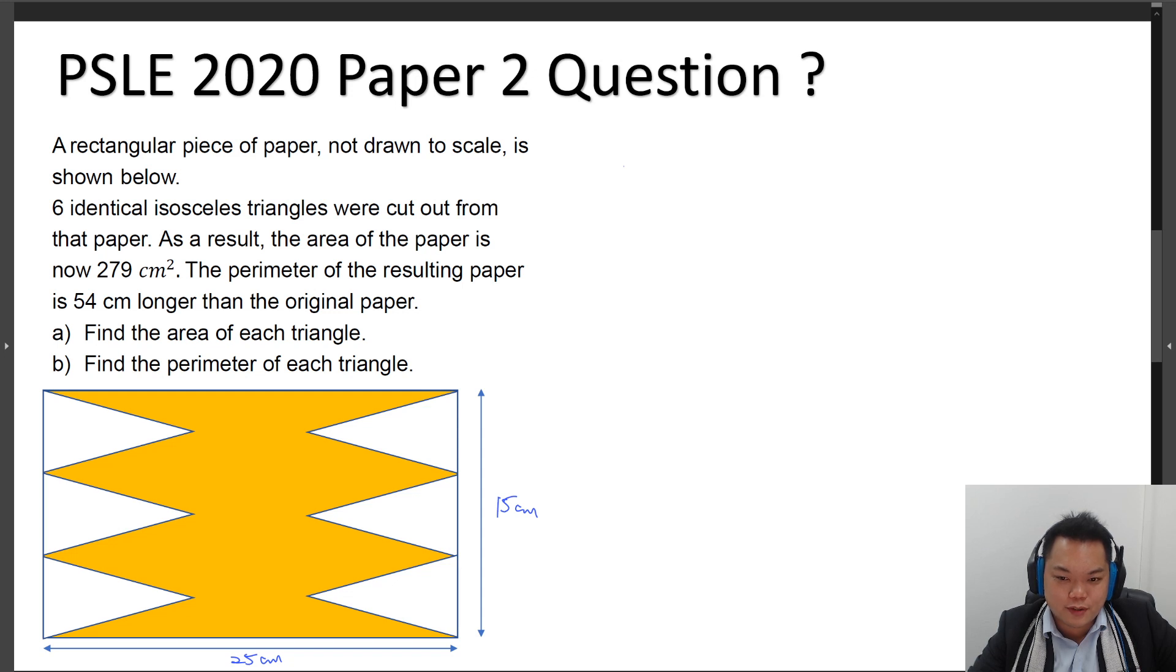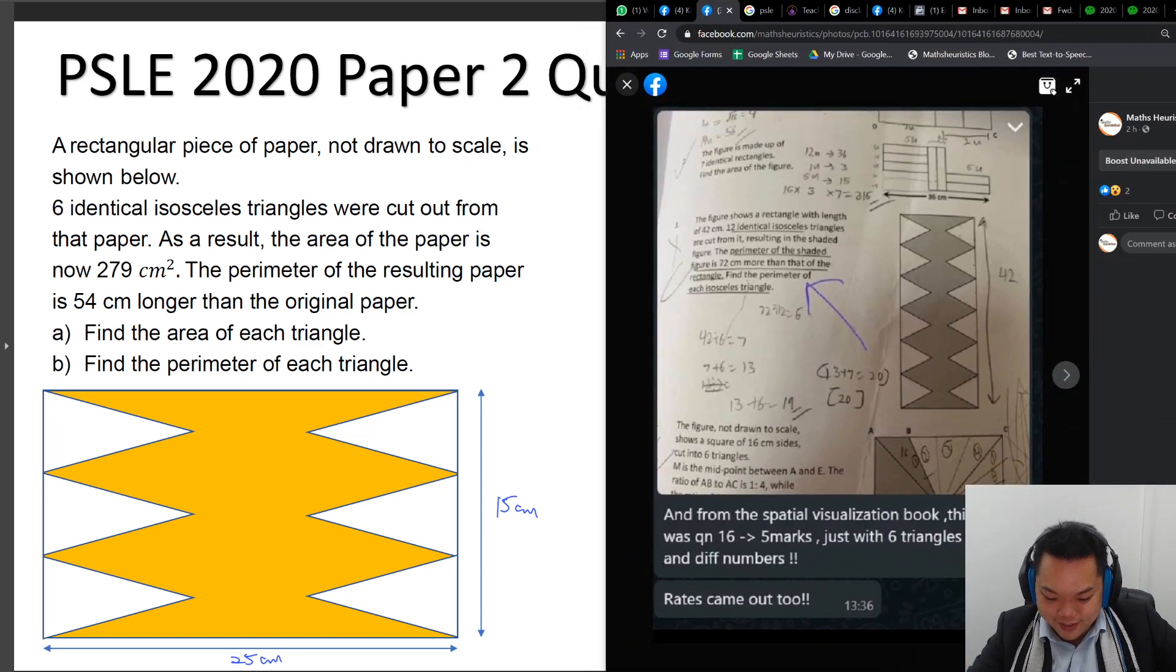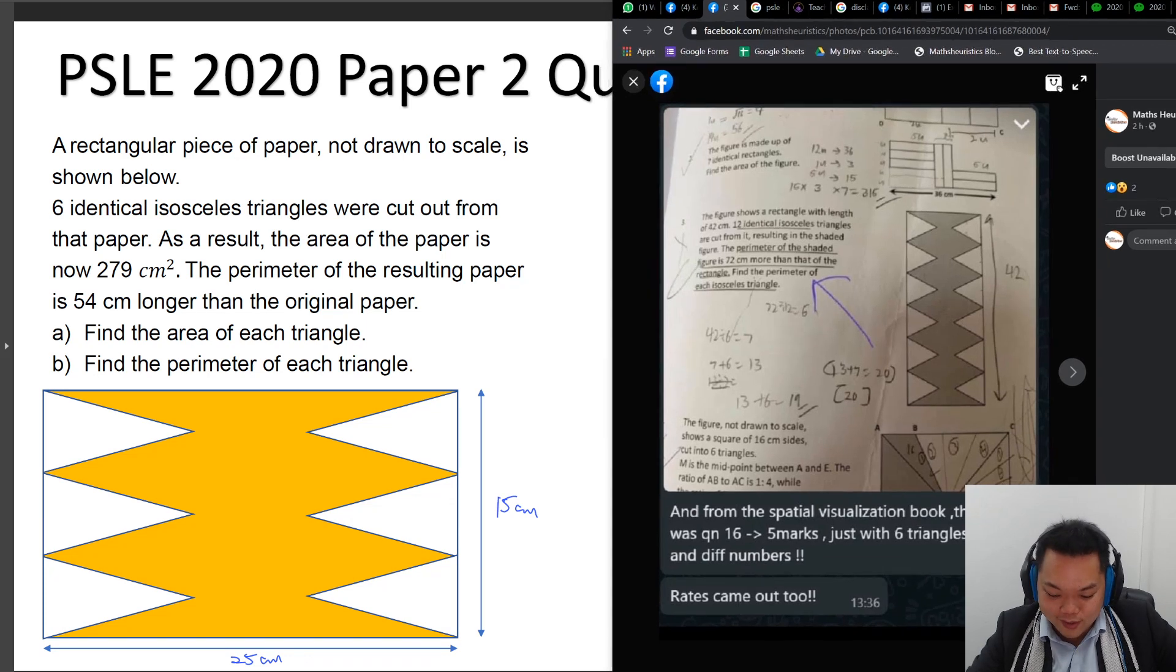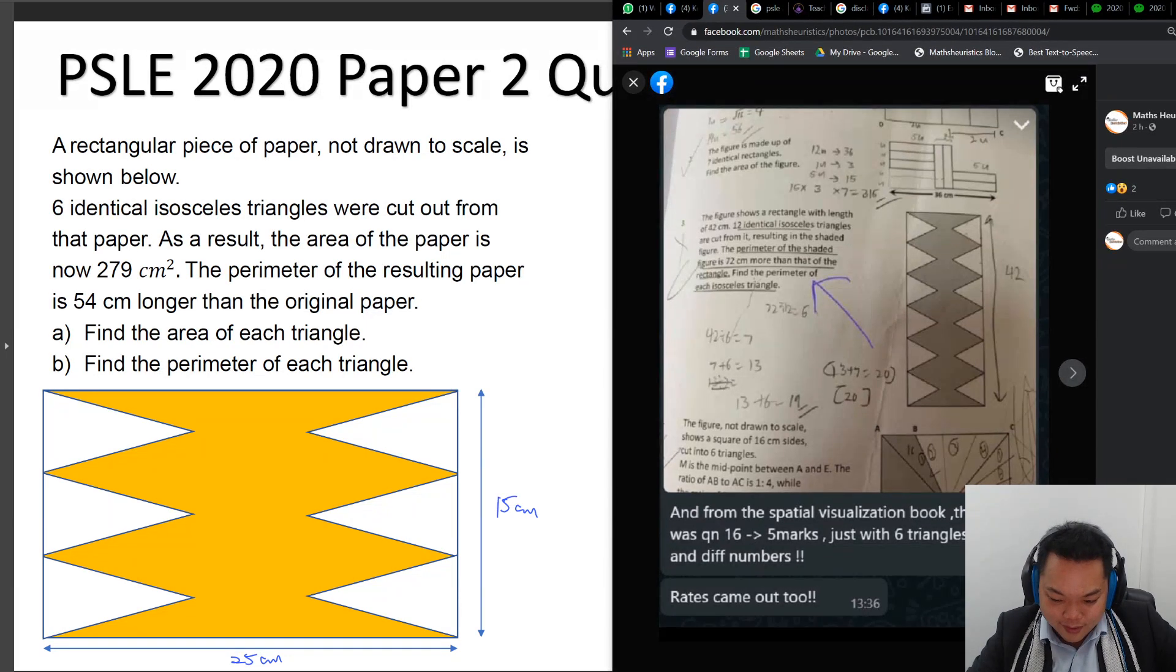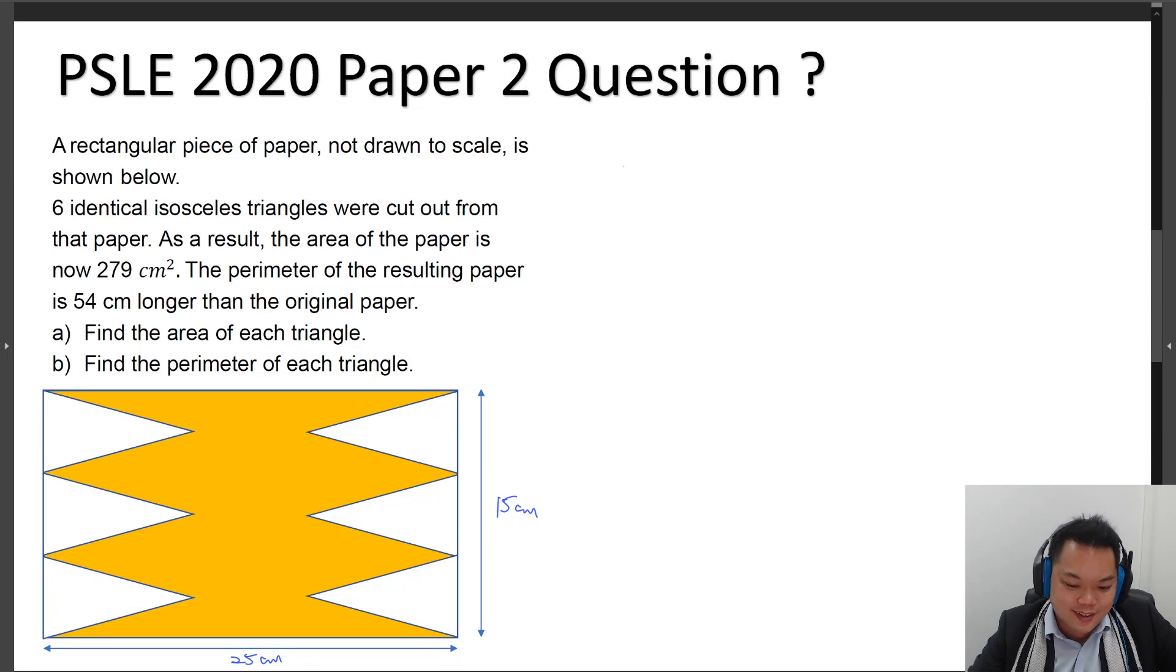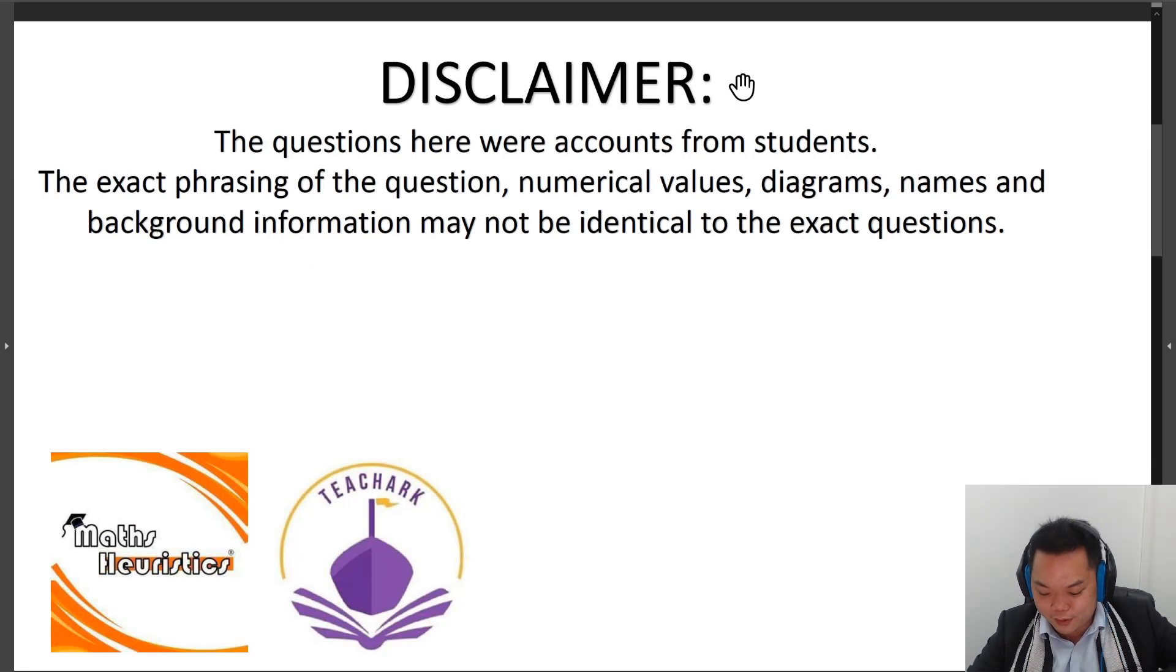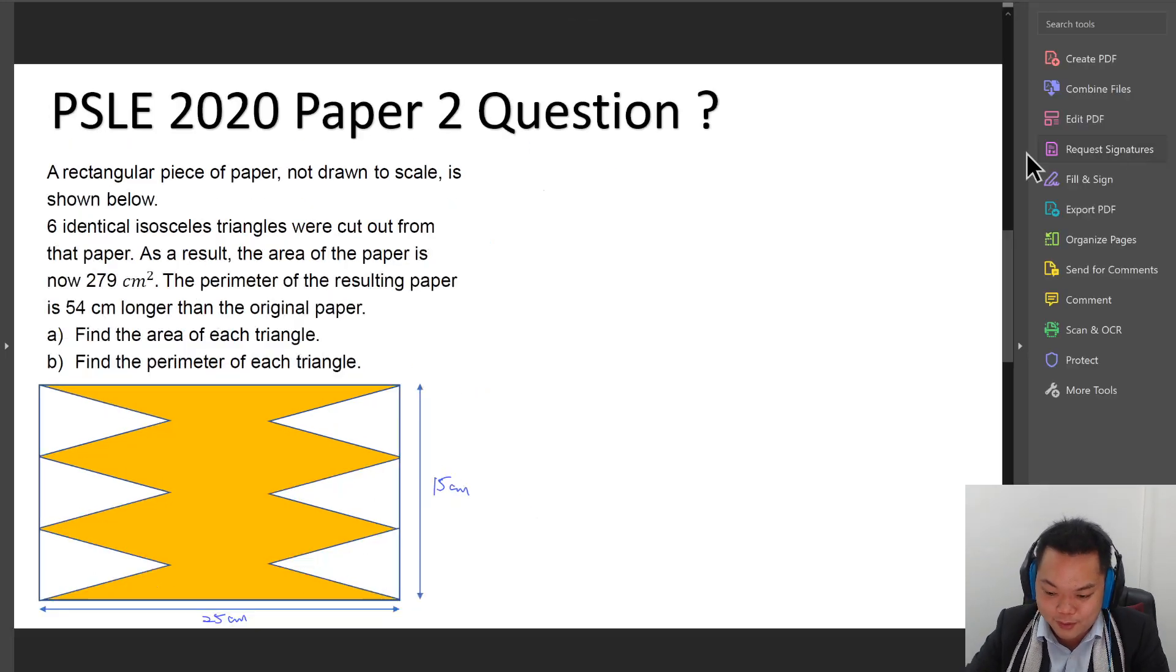Let me just bring up the WhatsApp chat over here. And this is from the spatial visualization book. This one was question 16, five marks, with just six triangles instead and different numbers. So I think I didn't read that carefully. Let me just edit this first.